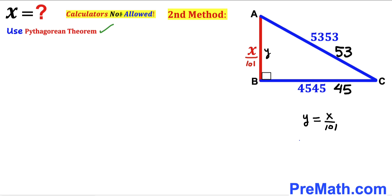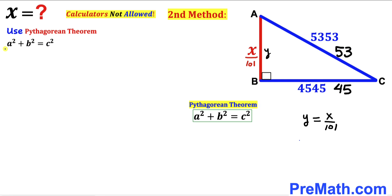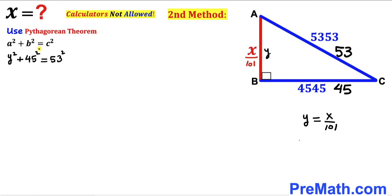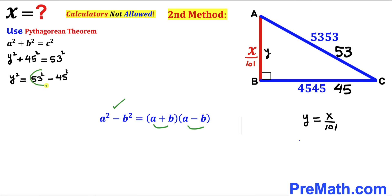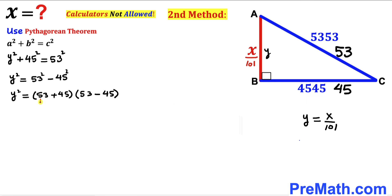Once again we focus on right triangle ABC and apply the Pythagorean theorem: a² + b² = c². In our scaled-down case, the hypotenuse is 53, one leg is 45, and the other leg is y. Filling in the formula: y² + 45² = 53². Moving 45² to the other side and applying the difference-of-squares identity, y² = (53 + 45)(53 − 45).